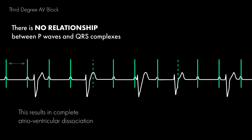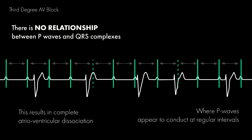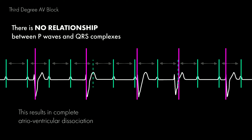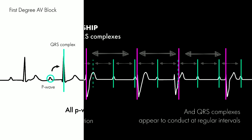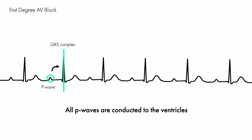In third degree AV block, there is complete atrioventricular dissociation, where P waves and QRS complexes appear to conduct at regular intervals, but independently of one another.